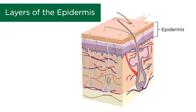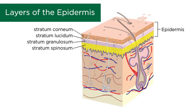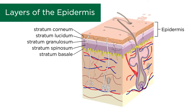The epidermis can be further divided into five different layers. These include the stratum corneum, the stratum lucidum, the stratum granulosum, stratum spinosum, and stratum basale.